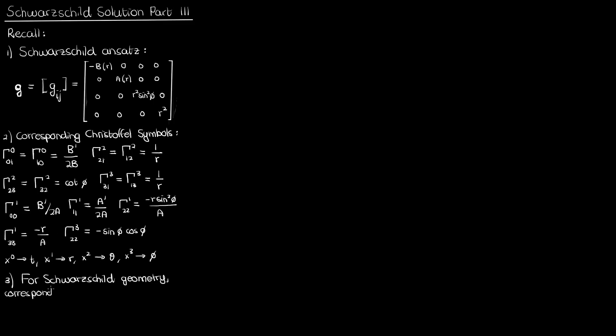The third thing to recall is that the Einstein field equations corresponding to Schwarzschild geometry are simplified to the Ricci tensor components all equaling zero. These are the vacuum Einstein field equations, meaning no dark energy and no other sources of mass or energy in the space surrounding our spherical mass. I've used i and j as the indices on my Ricci tensor here instead of the conventional mu and nu, but it's still the same idea.